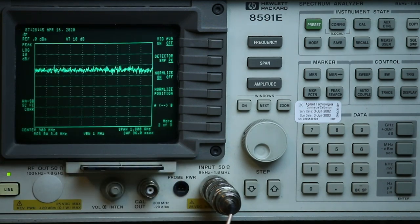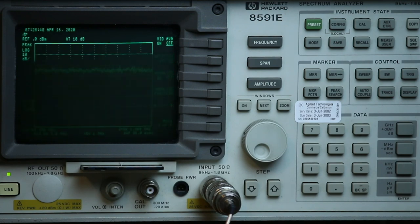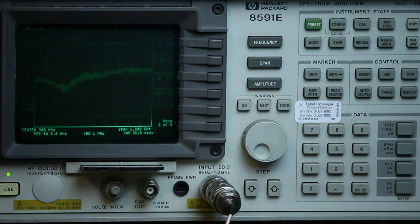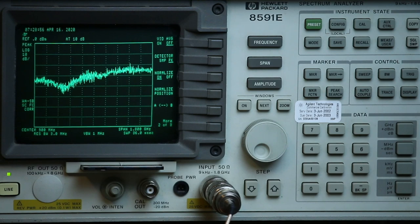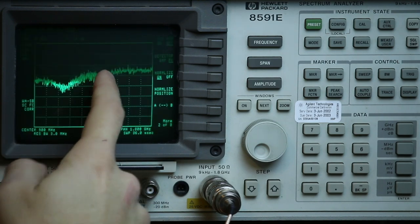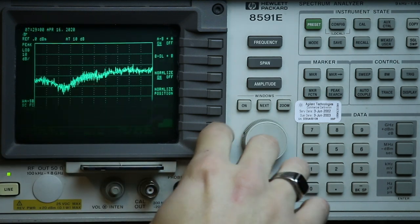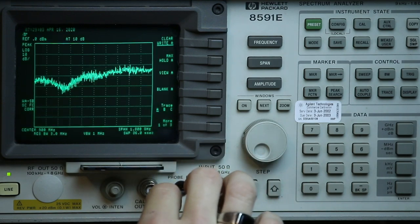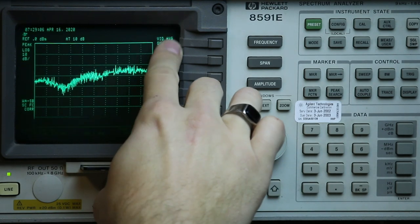I'm going to connect my device under test, which is our power divider. And you can see, I mean, if I had a tracking generator, it'd be a nice clean line. But because we're using a noise source, it's obviously noisy. Now we can go to video averaging on.